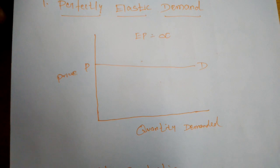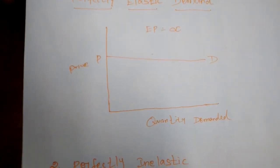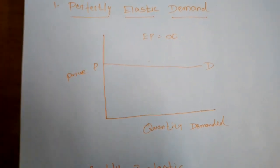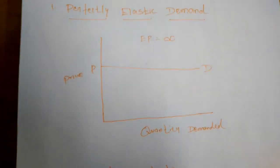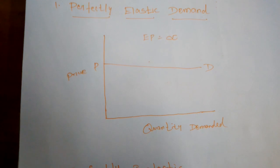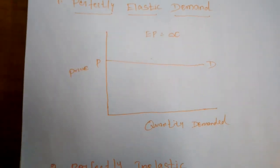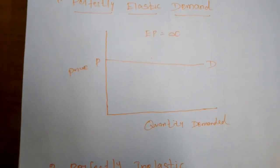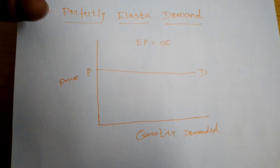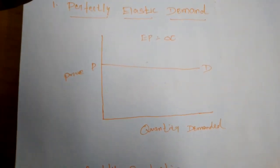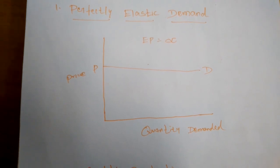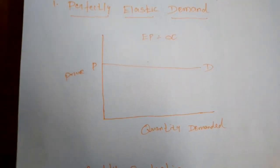For example, even a one-rupee increase in a commodity price can sometimes result in a higher demand change and sometimes a lower demand change. The elasticity of demand is therefore a technical term used by economists to describe the degree of responsiveness of quantity demanded for a commodity to a change in its price.